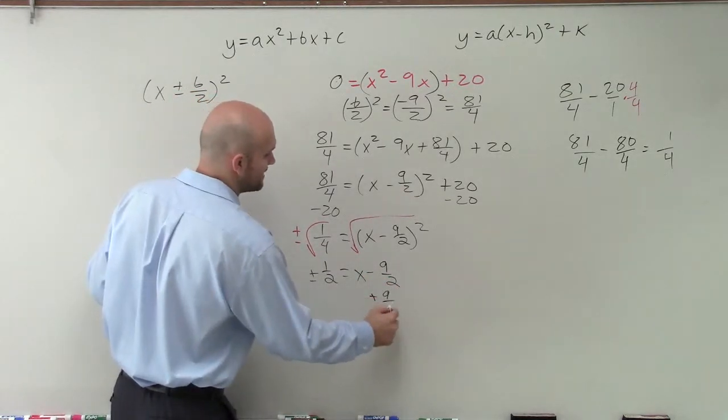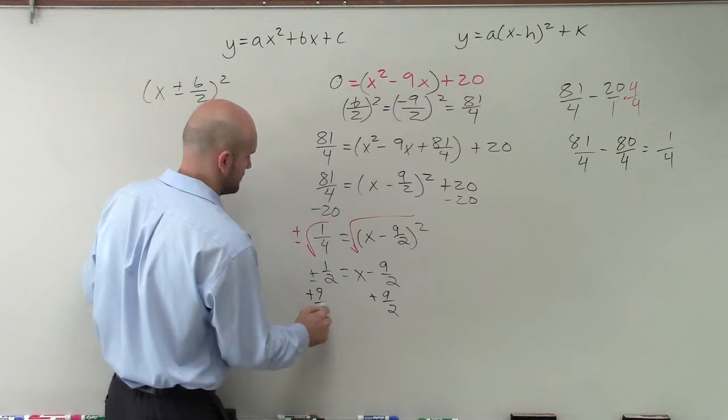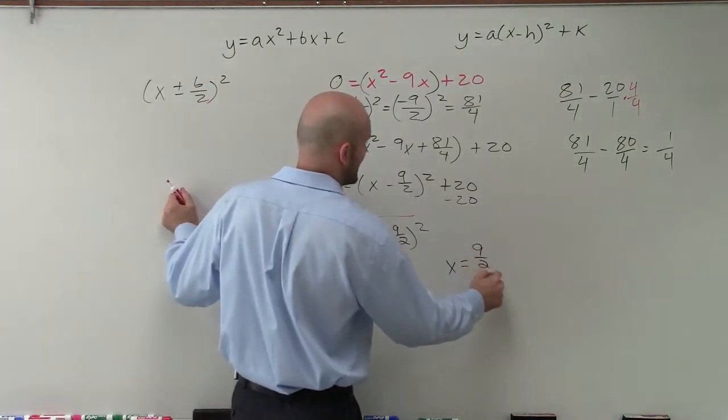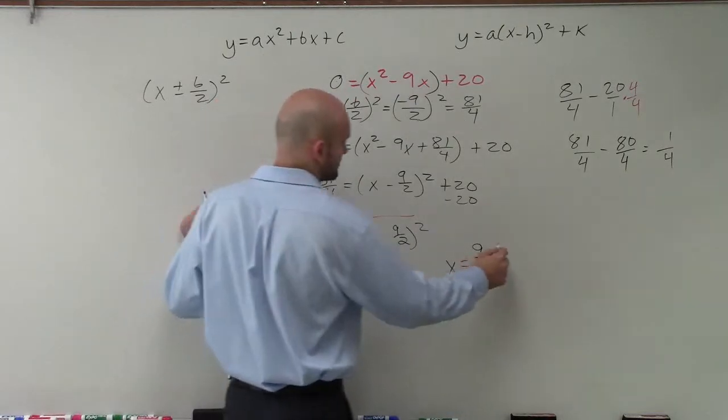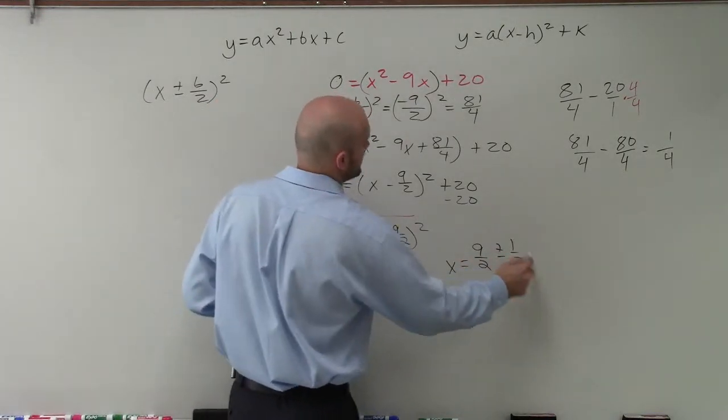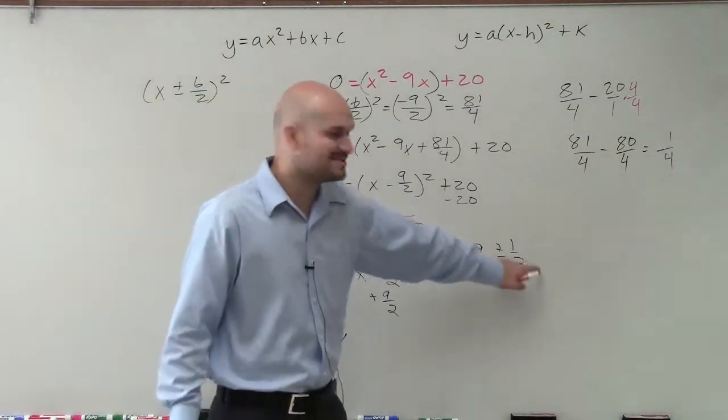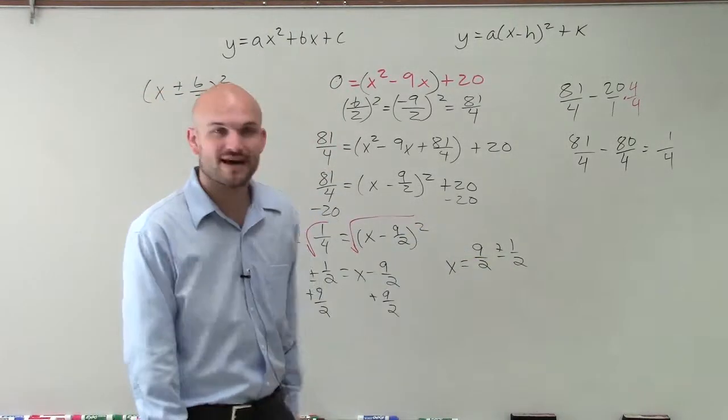Now to solve for my x, I'm going to add 9 halves. So therefore, I'll have x equals 9 halves, positive 9 halves, plus or minus 1 half. Now thankfully, we kept them as fractions. We didn't convert them to decimal. And we have the same denominator. So we can easily go ahead and find these two values.